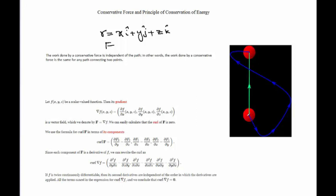So if we look at this picture, we have two points. The gravitational force is the same — if the path is directly the green line, or if the path is the blue line, then in both cases the work done by the gravitational force is the same. It depends only on the final and the first location of that object.